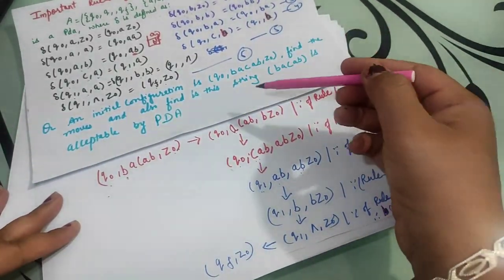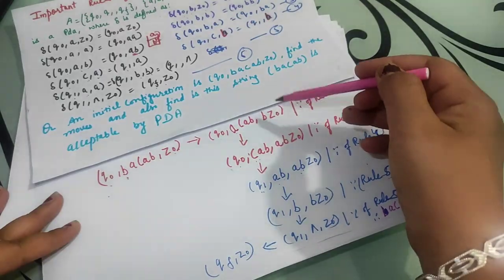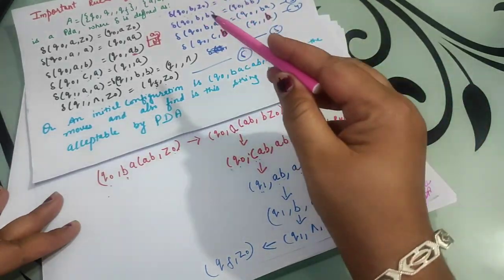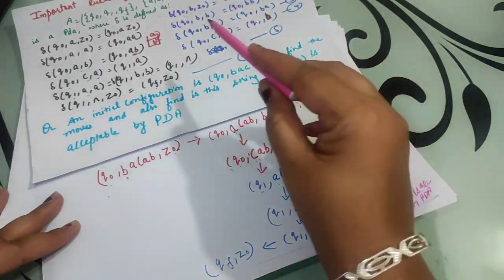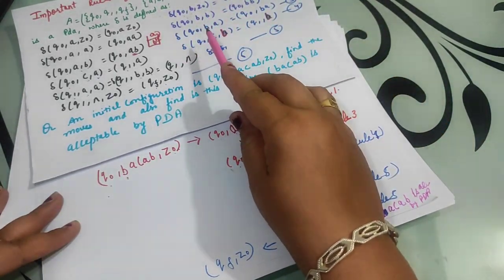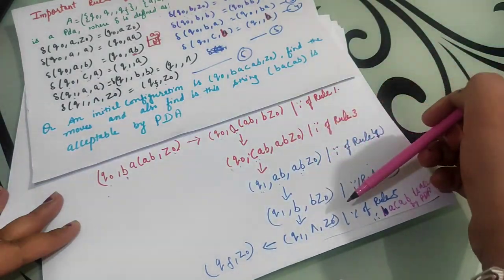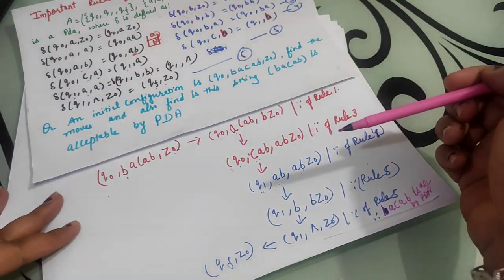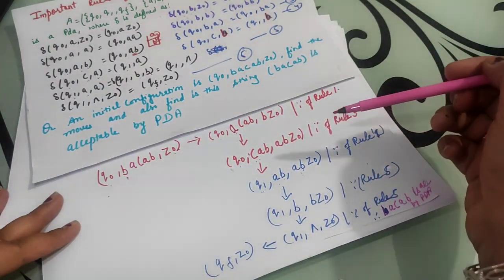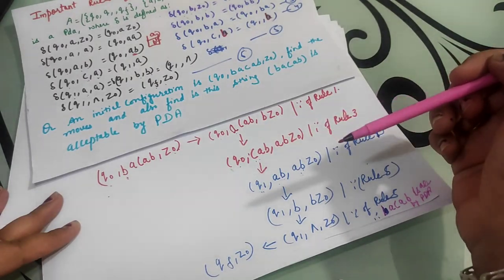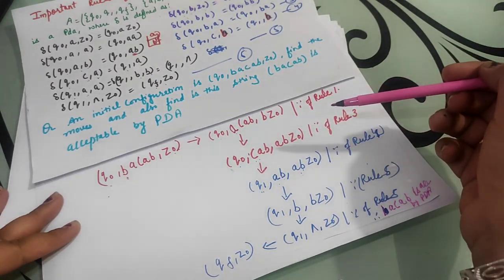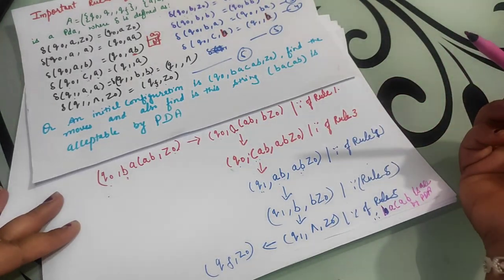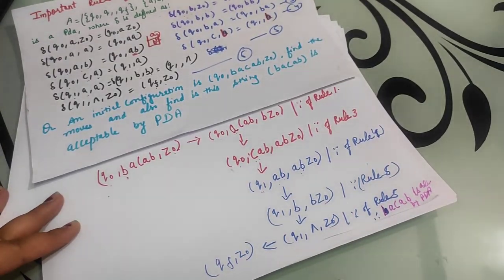This is how the acceptability of a string is found in the case of PDA. These are the rules we applied on this question to solve it. Students, if you understand, please like this channel, share with your friends, subscribe to the channel, and give your valuable feedback in the comments. Thank you.